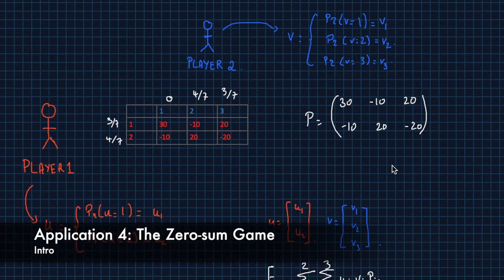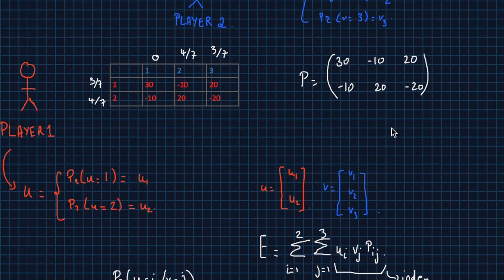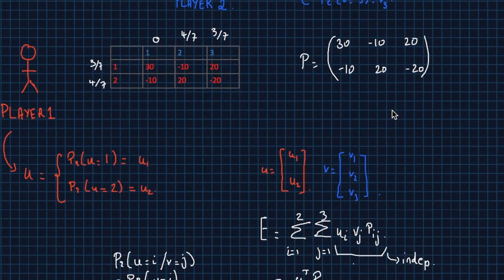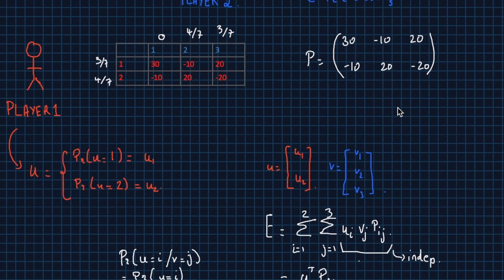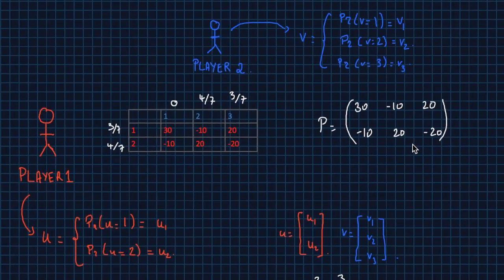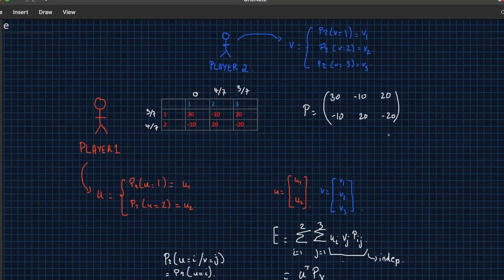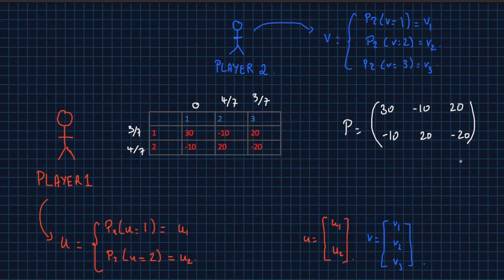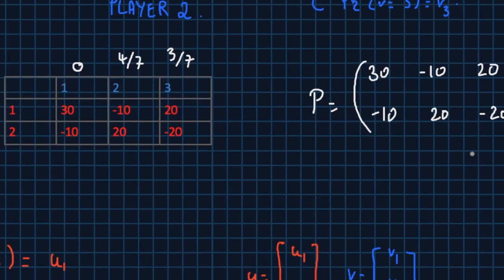In this one we're going to talk about a very interesting topic that arises a lot in game theory, which is the zero-sum game. We're going to start off with a very small and easy example to see what's going on, formulating the zero-sum game using two players as you can see here.